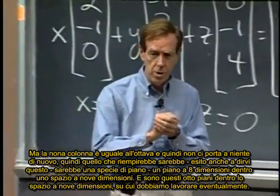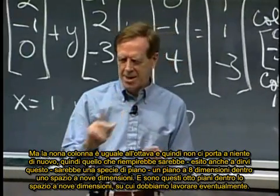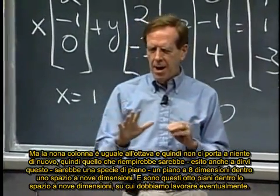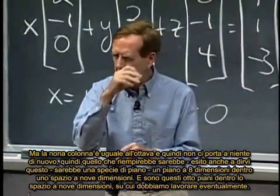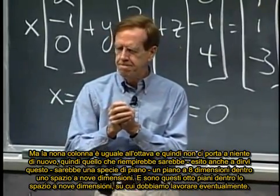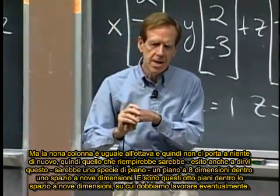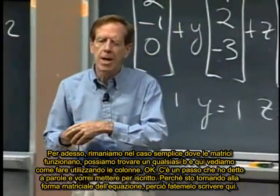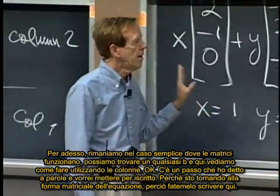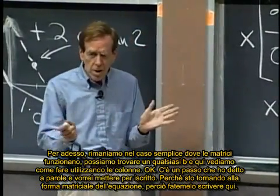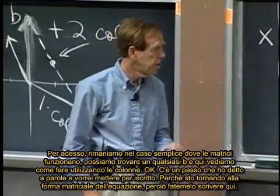Those nine columns and all their combinations may very well fill out the whole nine-dimensional space. But if the ninth column happened to be the same as the eighth column and gave nothing new, then probably what it would fill out would be, I hesitate even to say this, it would be a sort of plane, an eight-dimensional plane inside nine-dimensional space. And it's those eight-dimensional planes inside nine-dimensional space that we have to work with, eventually. For now, let's stay with the nice case where the matrices work, we can get every right-hand side B, and here we see how to do it with columns.